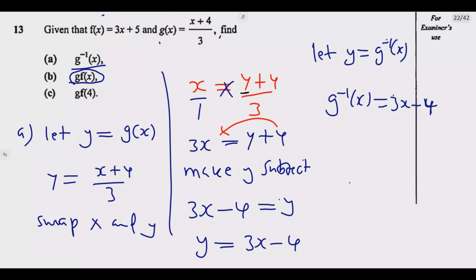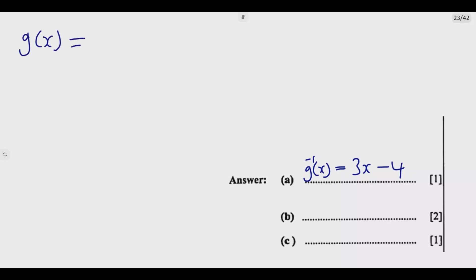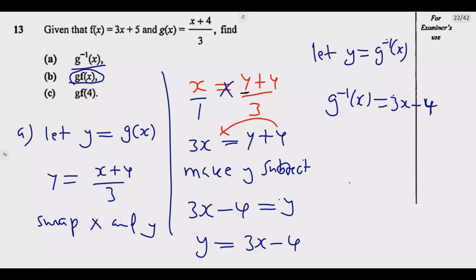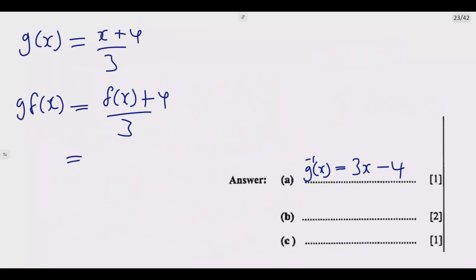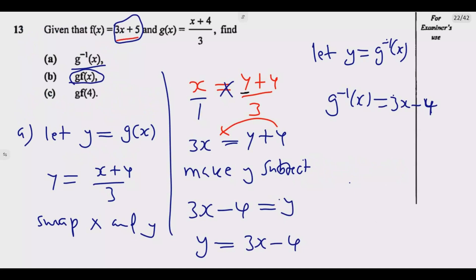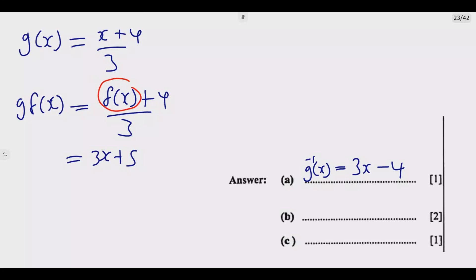So I'm going to first write g(x). So g(x) equals (x plus 4) over 3. So now we are looking for g(f(x)) equals now, whatever there is x we put f(x), then plus 4 over 3. Then we go back and look for the function. What is f(x)? f(x) is this one, 3x plus 5. So it now becomes 3x plus 5. I'm replacing this function within the actual function, which is this one. Then plus 4 over 3.